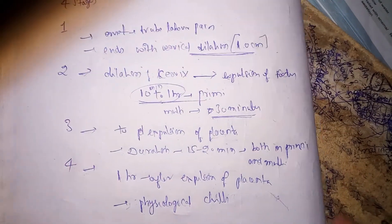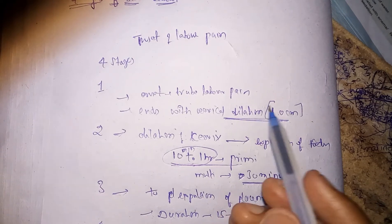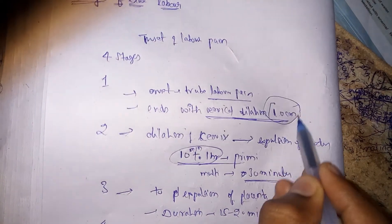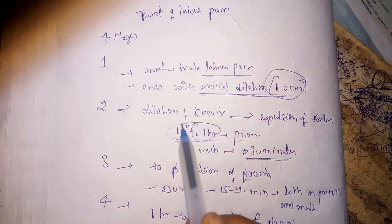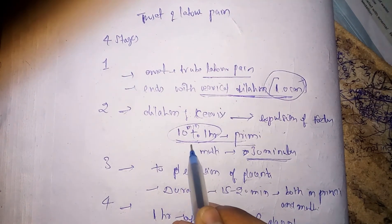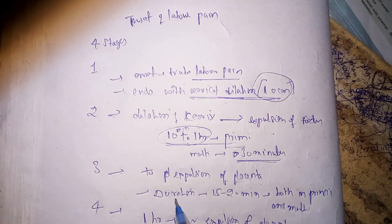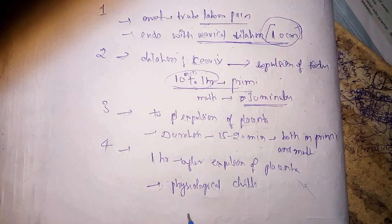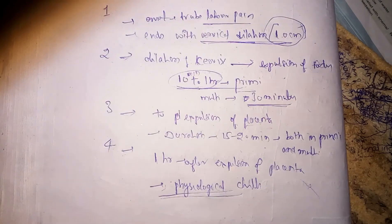To revise: there are four stages of labor. The first stage goes from labor pains to 10 centimeters of cervical dilation. The second stage goes from fully dilated cervix to expulsion of the fetus — 10 minutes to 1 hour in primigravida, 30 minutes in multigravida. The third stage involves expulsion of the placenta with a duration of 15 to 25 minutes, same in both. The fourth stage is one hour after expulsion of the placenta, during which physiological chills are observed.